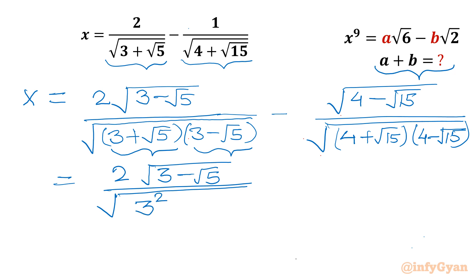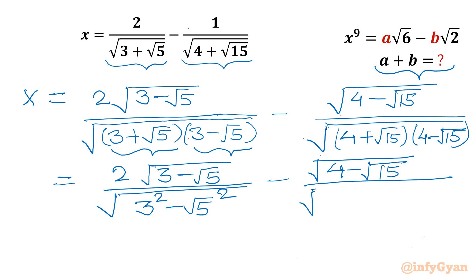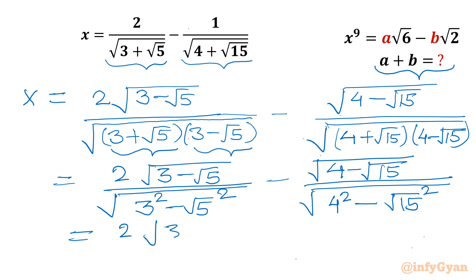Let us use the formula. I will write 2 times square root of 3 minus root 5 divided by the square root of a squared minus b squared. Here a is 3, so 3 squared; here b is root 5, so root 5 squared. Minus square root of 4 minus root 15, divided by square root where a is 4, so 4 squared minus root 15 squared. Now root 5 squared — the root cancels with power 2 — so the denominator will be 9 minus 5 for the first term. So 2 times square root of 3 minus root 5, divided by square root of 9 minus 5.